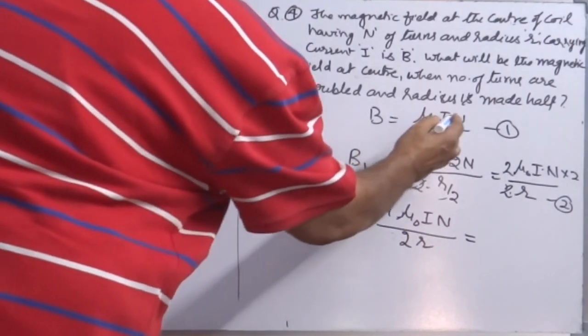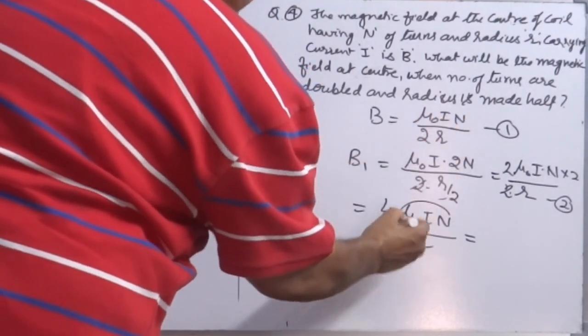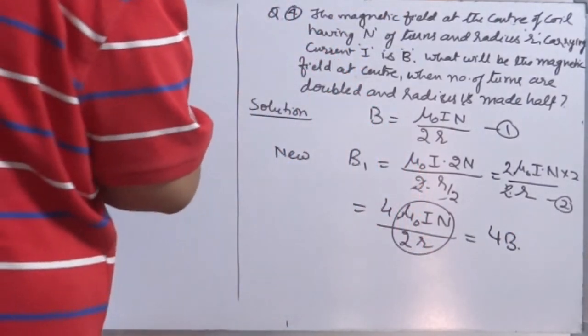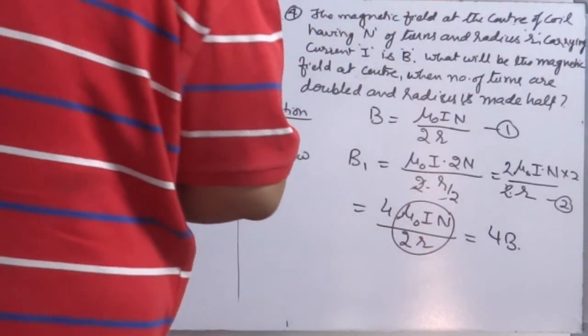So μ₀nI/2R is B. Therefore, it is 4 times the first case.